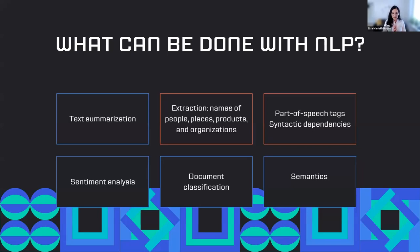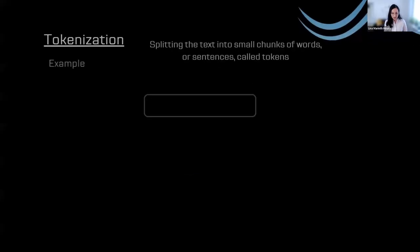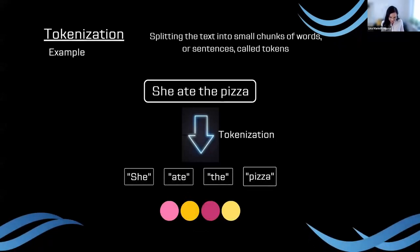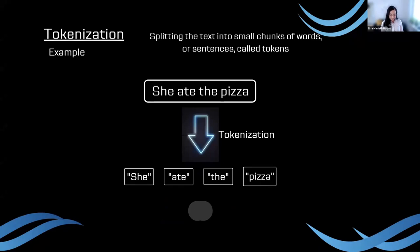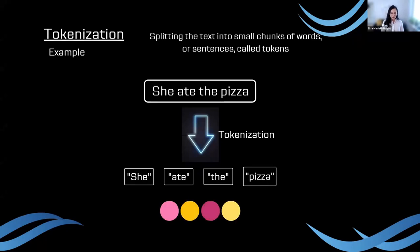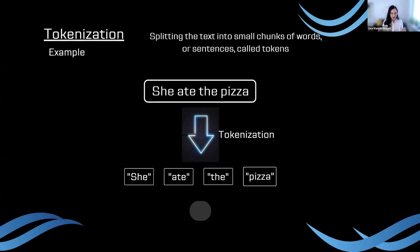Today I will focus on the extraction of names, products, places, and brands, as well as part-of-speech tagging and syntactic dependencies. One of the most essential aspects of NLP you need to know as a starter is tokenization — it's one of the first steps in any NLP pipeline. Tokenization means splitting text into small chunks, words, or sentences called tokens. For example, 'She ate the pizza' is split into its component words, each known as a token.